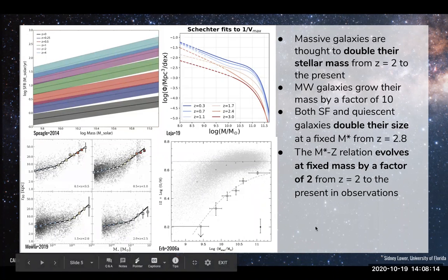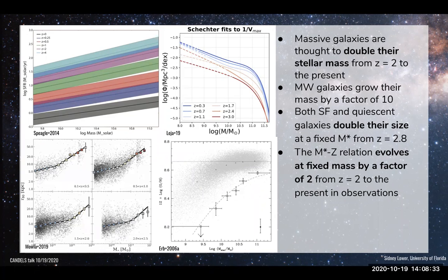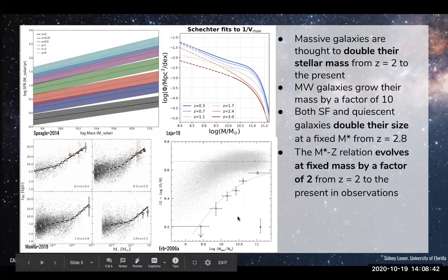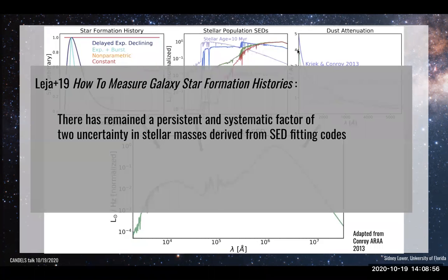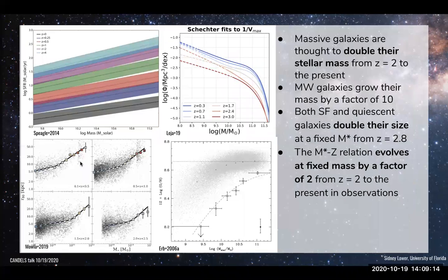Stellar mass is so fundamental to galaxy evolution. I'm showing a couple of scaling relations here: the star forming main sequence and galaxy stellar mass function. For many of these scaling relations, evolution happens at about a factor of two. For the stellar mass-stellar metallicity relation, there is an evolution at a fixed mass — galaxies evolve by a factor of two from redshift two to present day. The stellar masses inferred from SED fitting also tend to have uncertainties at the factor of two level, making it hard to reconcile these scaling relations.